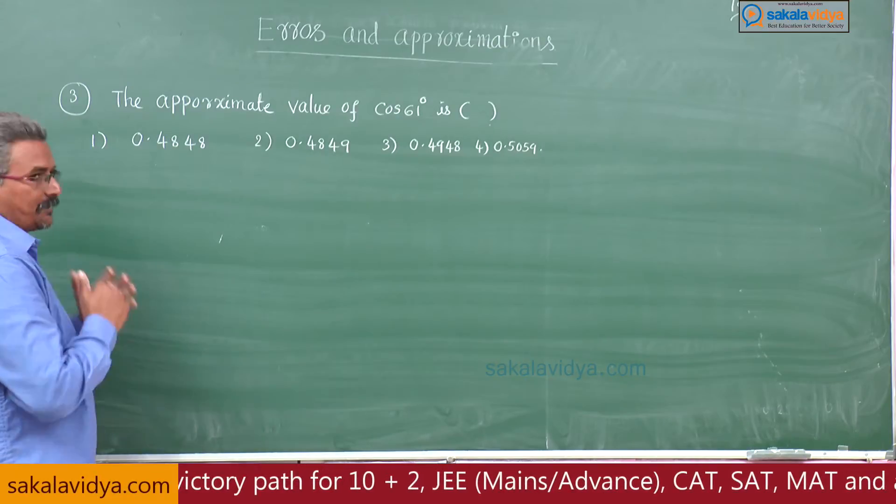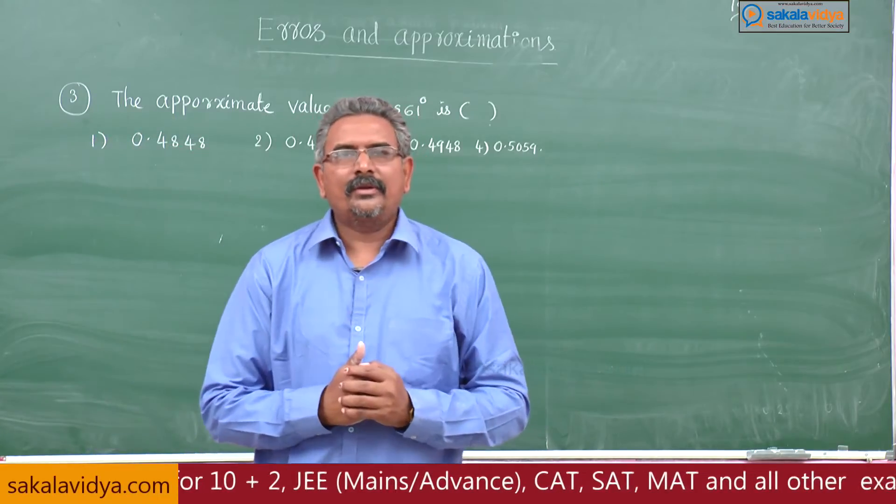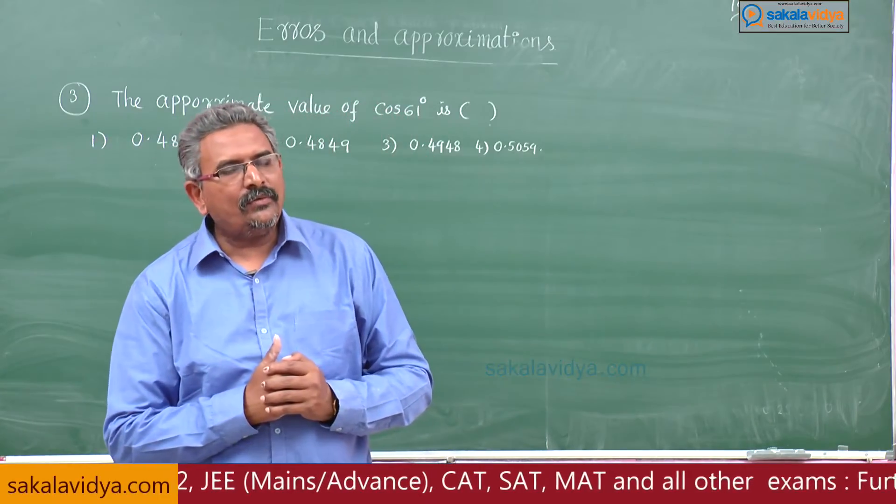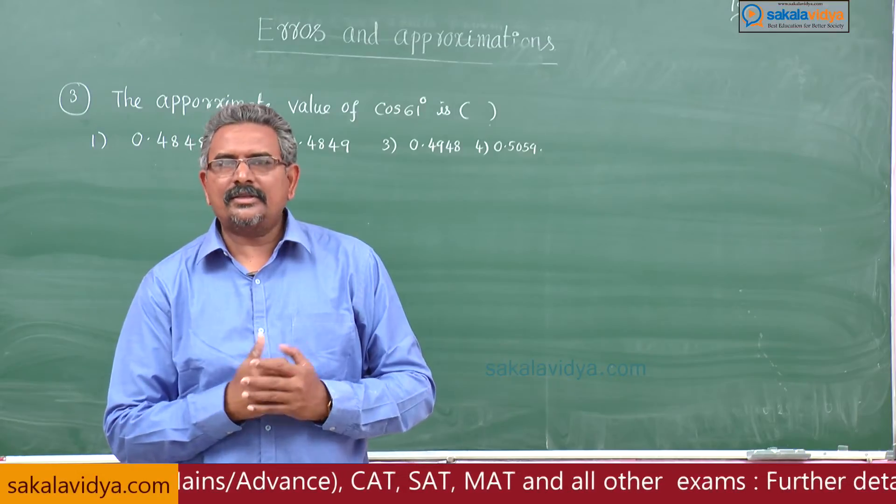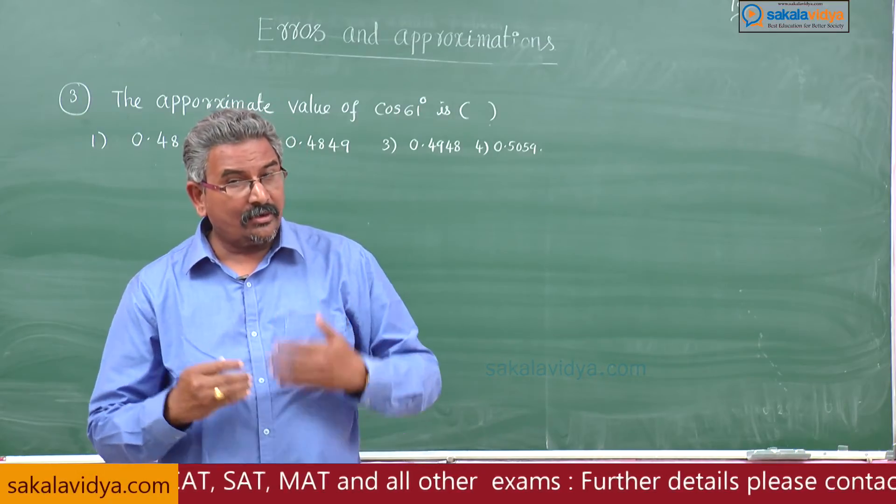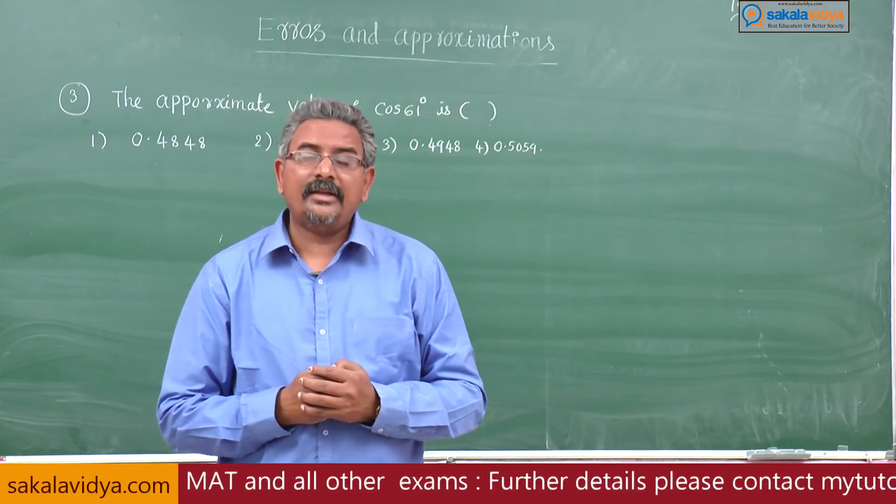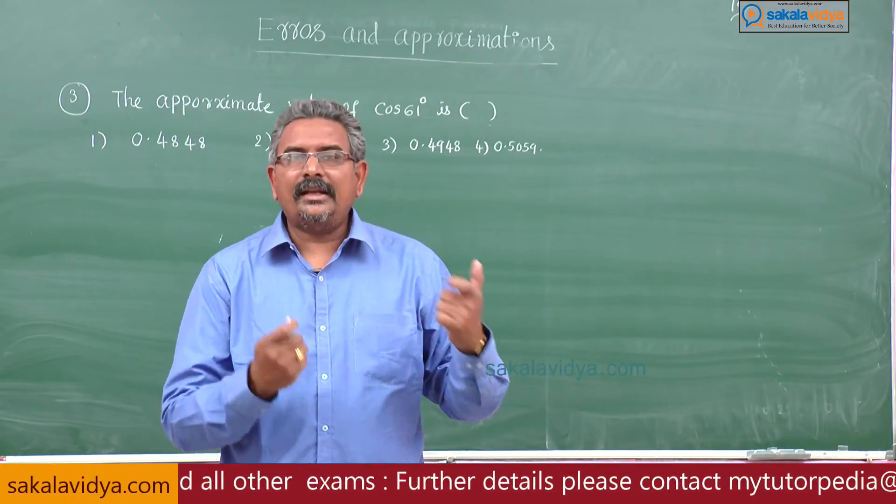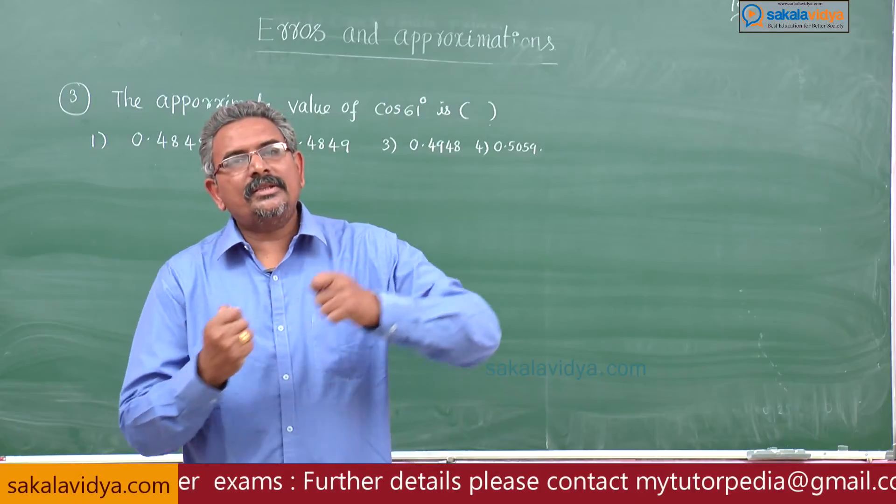How to solve this problem? Let us analyze it. We know the value of cos 60 degrees, there is no doubt at all, that is 1 by 2, but here we are asked to find out cos 61 degrees without using any calculator or tables.